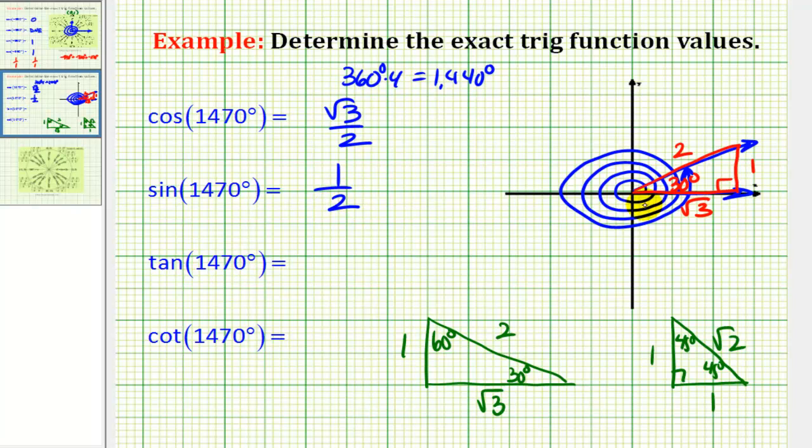Tangent theta would be equal to the ratio of the opposite side to the adjacent side. So we'd have 1 over square root of 3, or 1 divided by square root of 3. You may be required to rationalize this. Let's go ahead and do that. So we'd have square root of 3 all over 3.